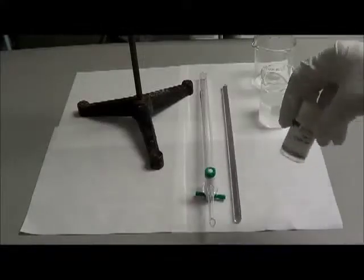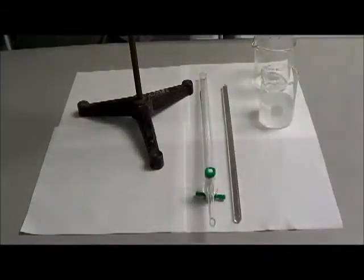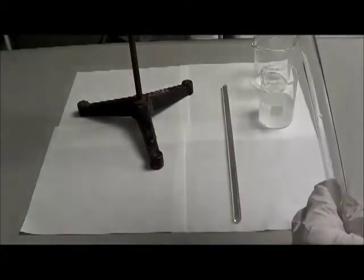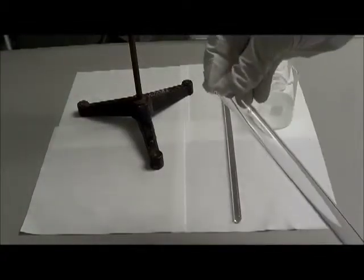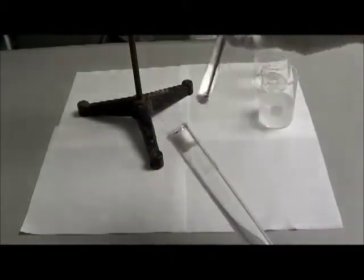The first step in setting up the column was to get some glass wool and loosely ball it to a half inch in diameter. The loosely balled piece of glass wool is then inserted and pushed to the bottom of the column with a glass stirring rod.